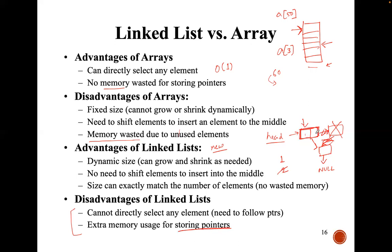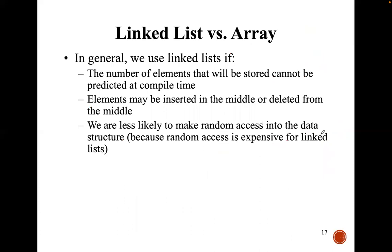In general, how do we decide whether to use linked list or array? We are going to use linked list if the number of elements that will be stored cannot be predicted at compile time. For example, if you are designing a product website and right now you have six products but it can vary — you can have 100 products, 200 products, or 100K — if you cannot decide the number of elements at compile time, it is a better choice to use the linked list.